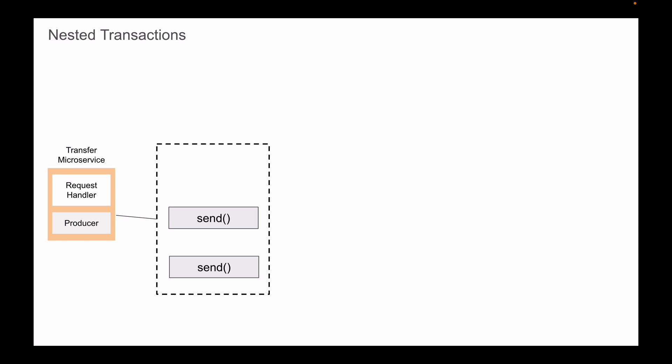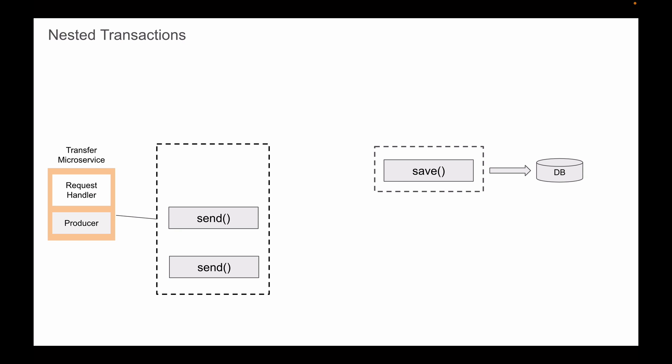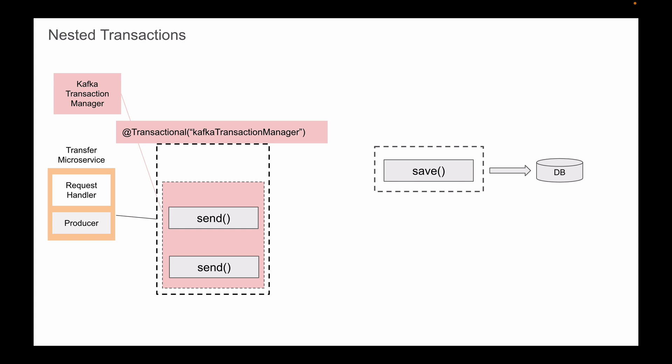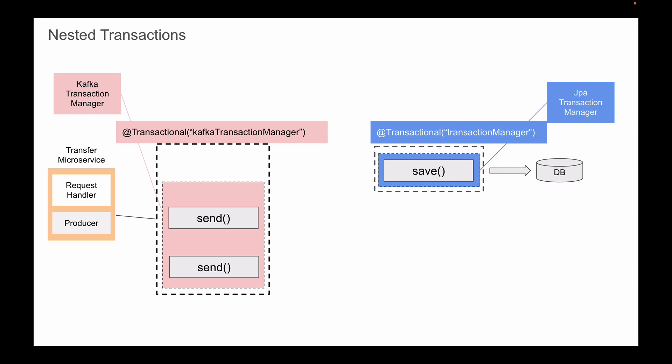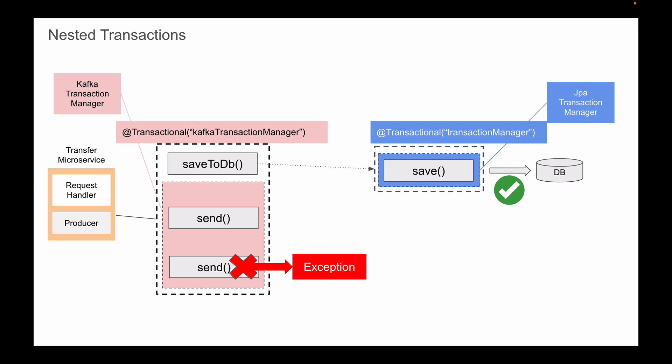If you do not need synchronized transactions and want to perform database transactions separately from Kafka transactions, then you will need to organize your code into two separate methods. Java code that sends messages to Kafka topics will be in one method, and Java code that updates the database will be in another method. The method that works with Kafka operations will be annotated with the transactional annotation using the Kafka transaction manager, and the method that performs database operations will be annotated with the transactional annotation using the JPA transaction manager. You then call one method from another, creating two separate nested transactions. In this case, even if an exception occurs within the Kafka transaction, the database transaction can still commit — the Kafka transaction will roll back, but the database transaction will not.